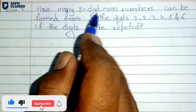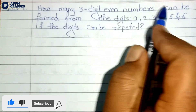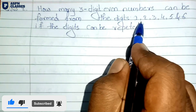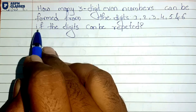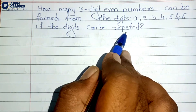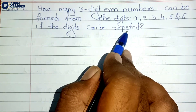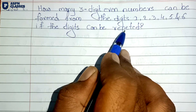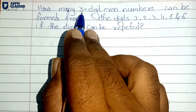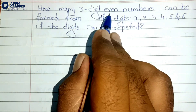The second question: how many 3-digit even numbers can be formed from the digits 1, 2, 3, 4, 5, 6, if a digit can be repeated? Here repetition is allowed, and the condition is that we need 3-digit even numbers.